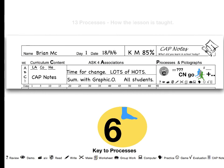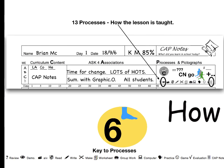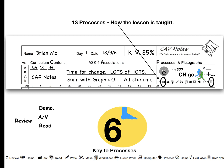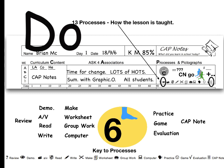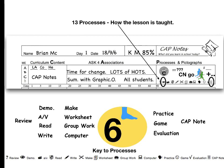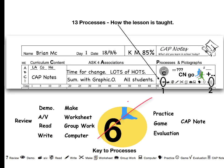Step 6: processes. Processes are how the lesson is taught — think of a process as an activity. There are 13 processes, each representing what teachers do in a lesson. Each cap note has a key to the 13 processes on the bottom of the sheet. Number processes in order of presentation.